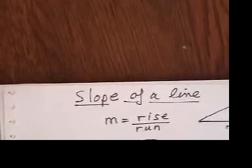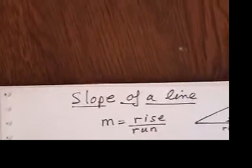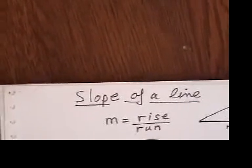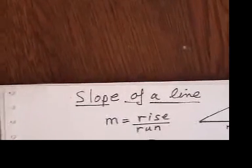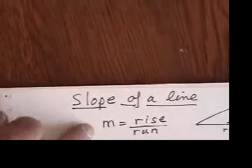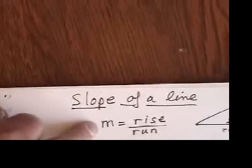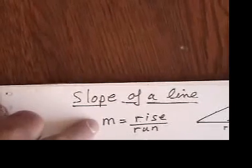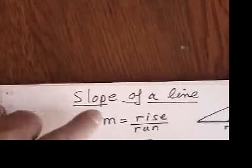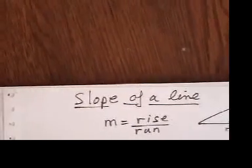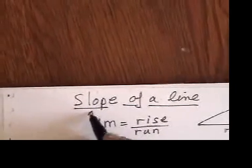This next video is a little bit just on what is the slope of a line. What does it refer to? What does it mean? The general formula that we use is rise over run. We call the slope of a line M. So whenever you see the letter M, we're referring to slope.